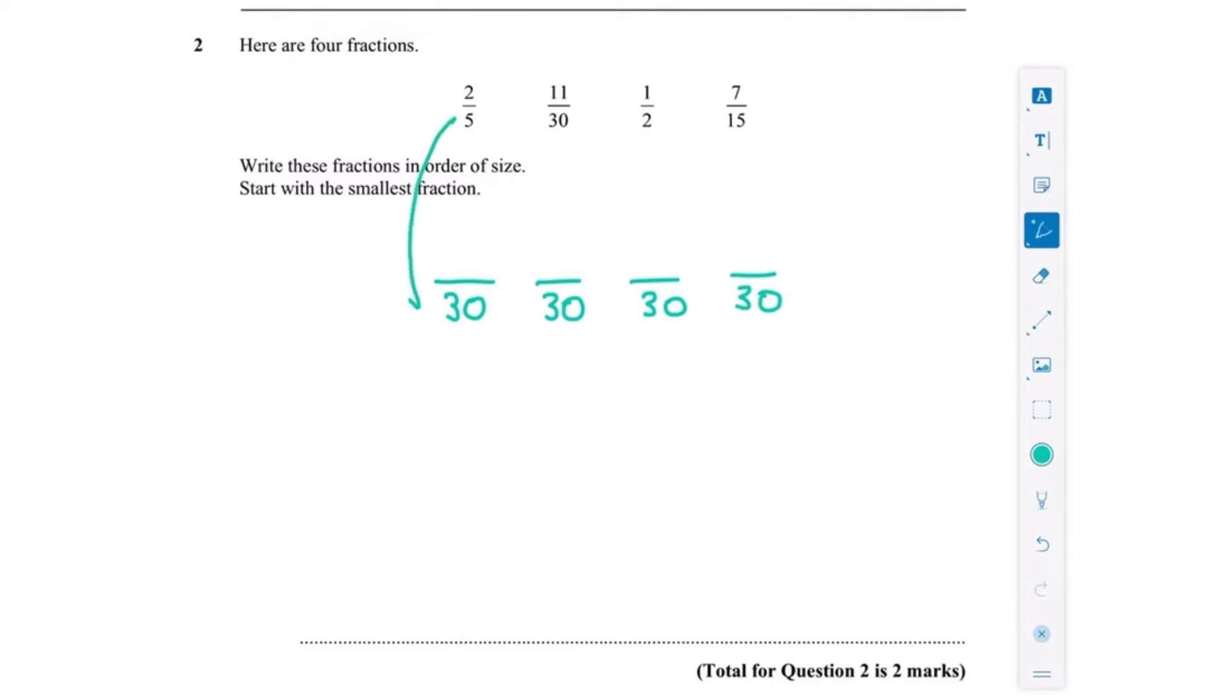30, 30, 30, and 30. Then we need to think, what have I multiplied the denominator by, the bottom number, in order to make it 30? In this case, we've multiplied that by 6. So if we've multiplied the bottom of a fraction by 6, we also need to multiply the numerator by 6, because what we do to the bottom we have to do to the top in order to keep the fractions the same. So 2 is going to become 12. With the second fraction, this one was already out of 30, so that's 11 out of 30.